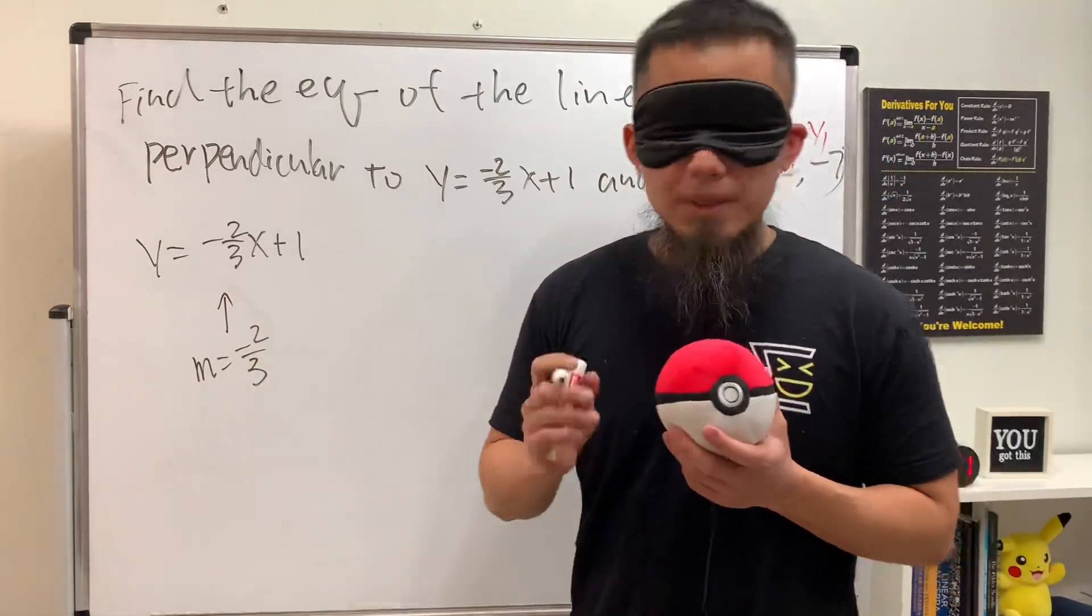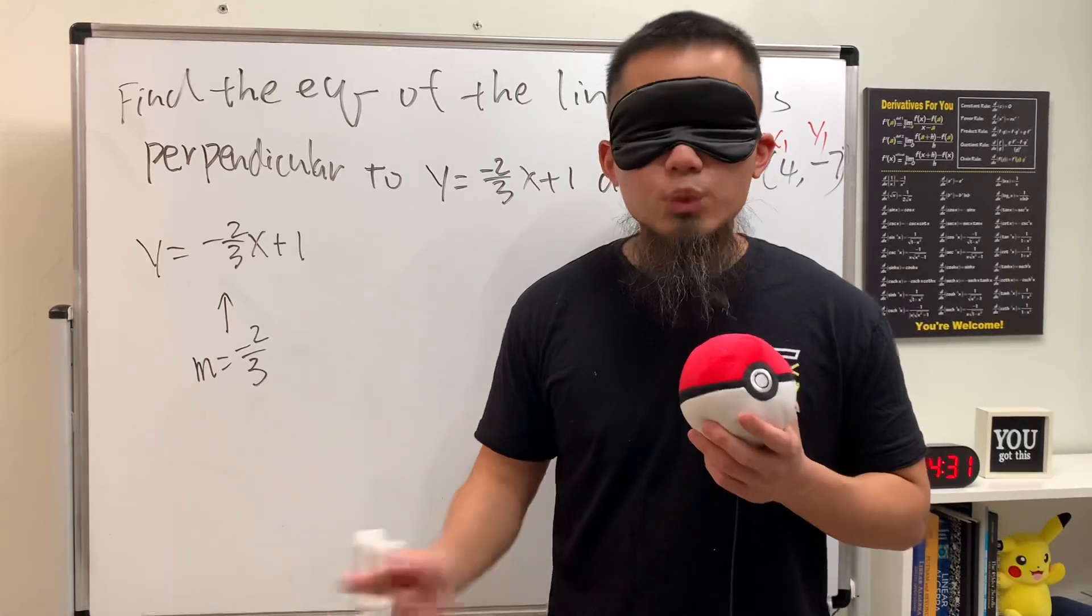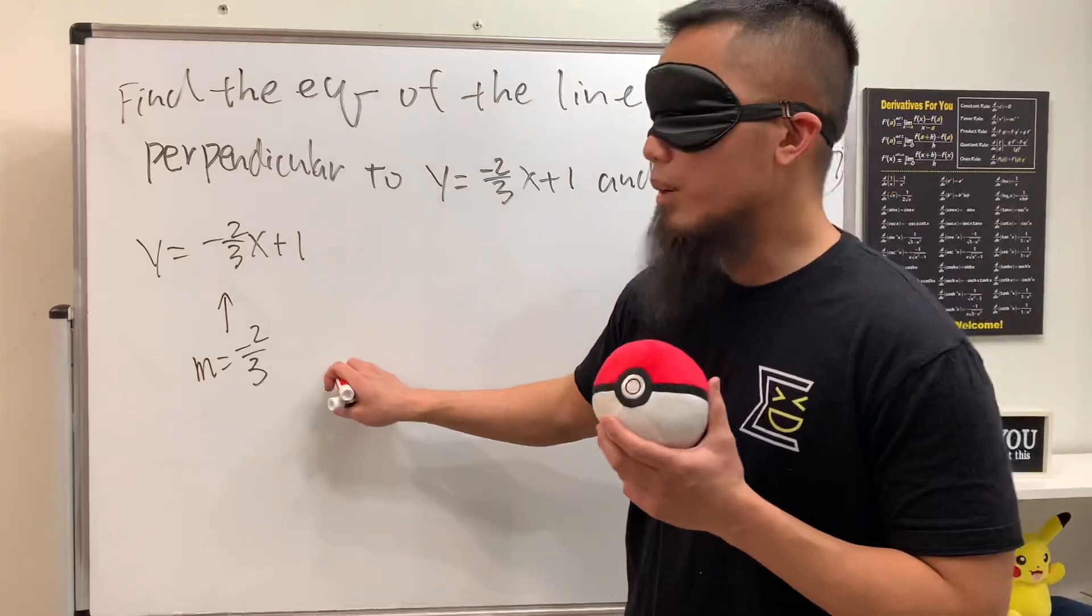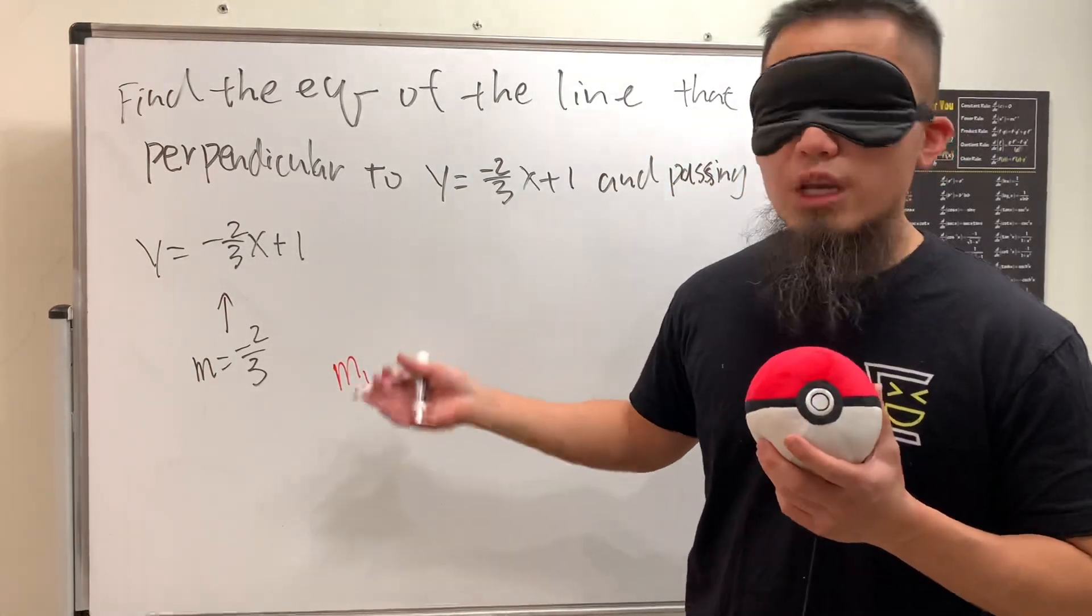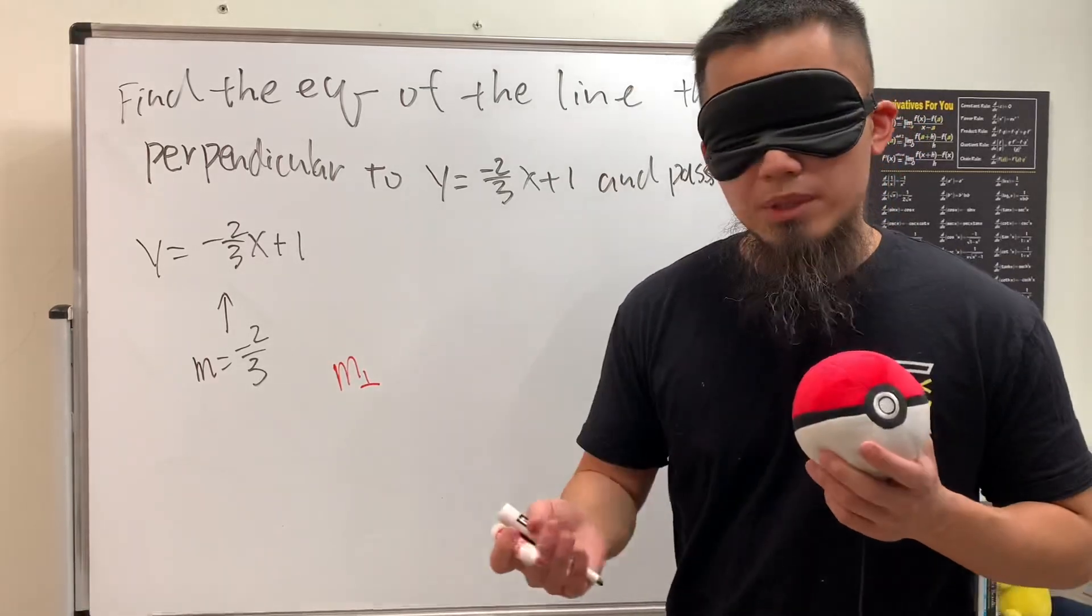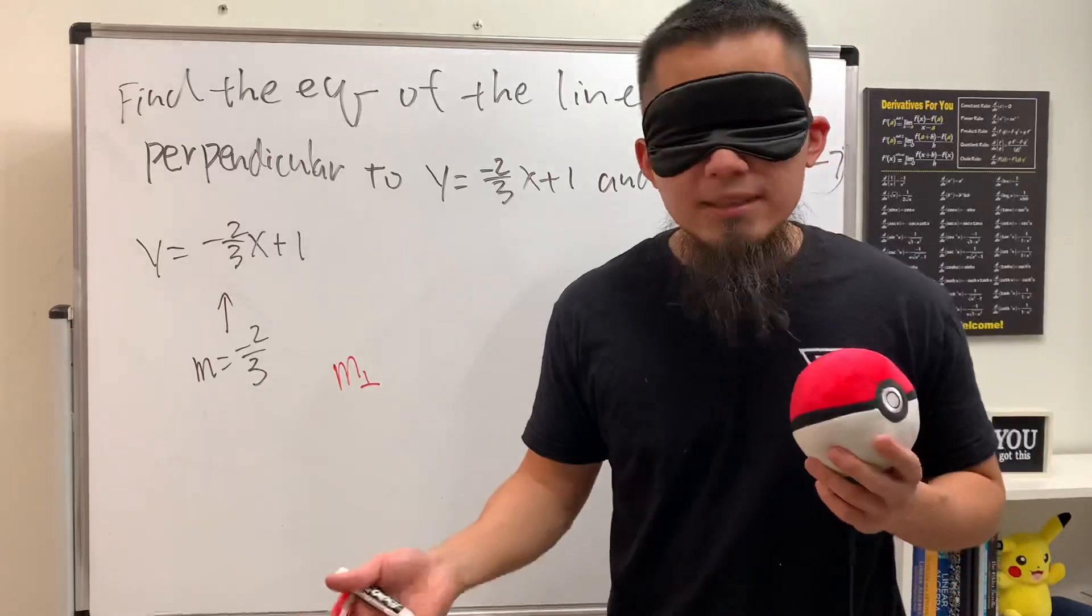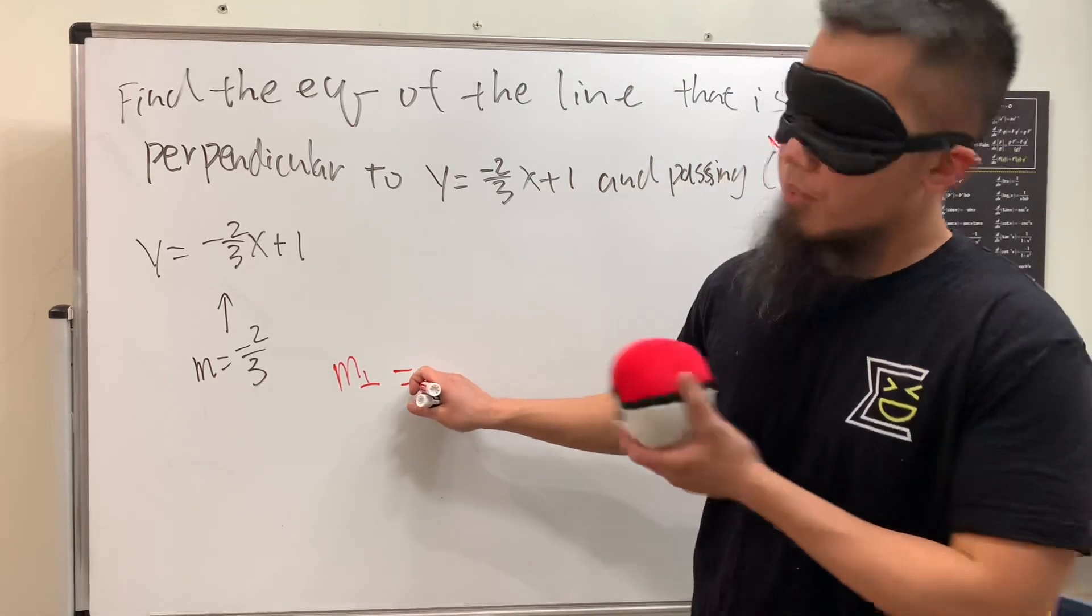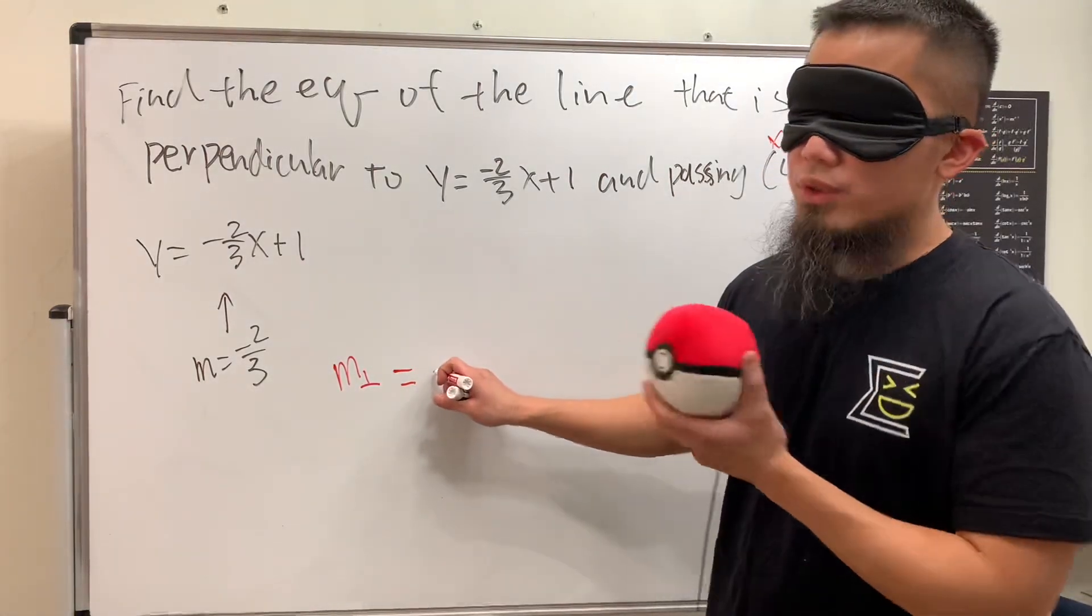We're trying to find a line that's perpendicular to this, so we have to get the perpendicular slope. The upside-down T stands for perpendicular. To find it, we do the opposite sign and the reciprocal. So the perpendicular slope is positive three over two.